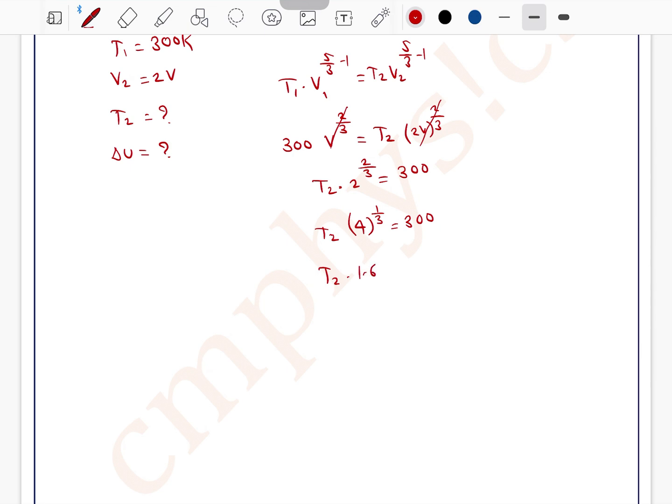T2 into 1.6 is equal to 300, so T2 is equal to 300 divided by 1.6. Now 300 divided by 1.6 is equal to 187.5.